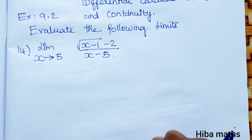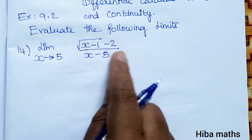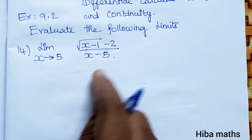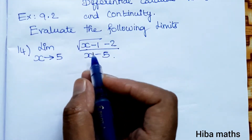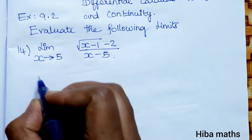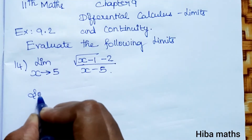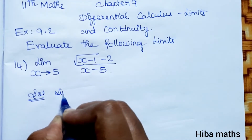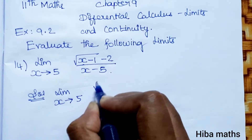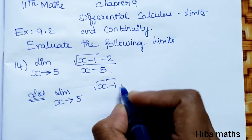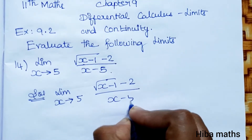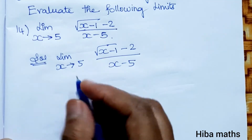Limit x tends to 5: root of (x minus 1) minus 2, divided by x minus 5. The root found in the numerator means we should use the conjugate. Let's look at the solution: limit x tends to 5 of root (x minus 1) minus 2, divided by x minus 5.